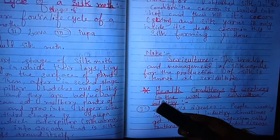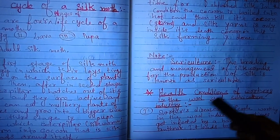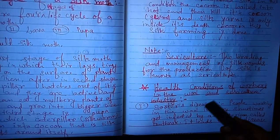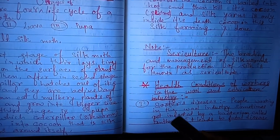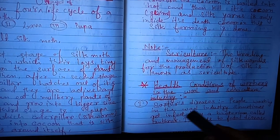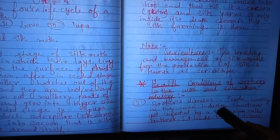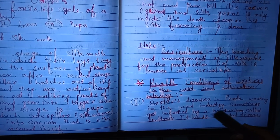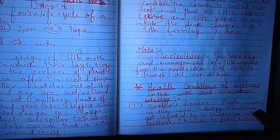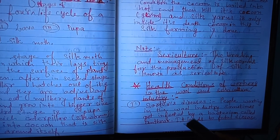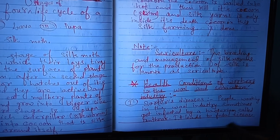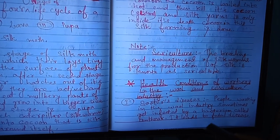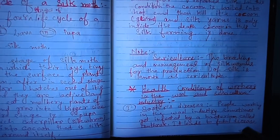Now we are going to talk about the health conditions of workers in the wool and sericulture industries. First: sorter's disease. People working in wool industries sometimes get infected by a bacterium called anthrax, which leads to a fatal disease.